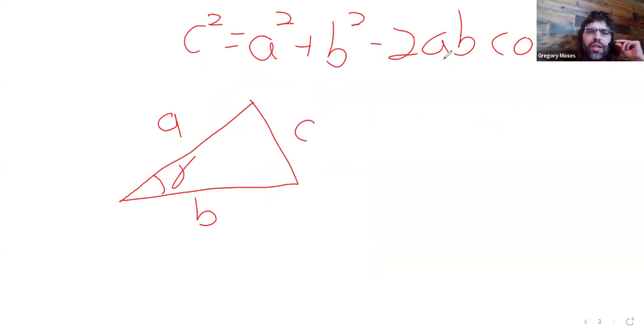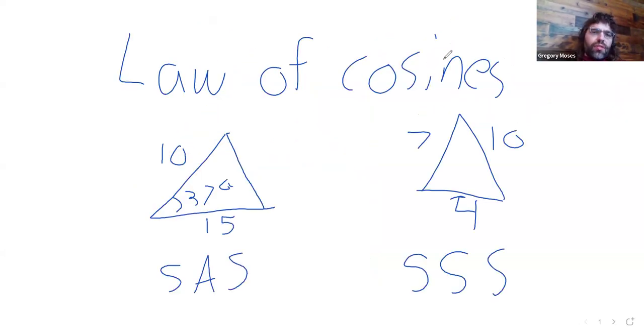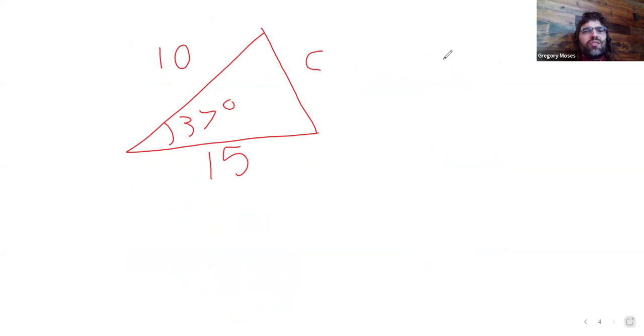You can see how this could be used in this side angle side case. Or if it's not obvious, it will hopefully be made clear by an example. We can go ahead and use the numbers I wrote here. 10, 37, 15. And let's use that information to find this side C.